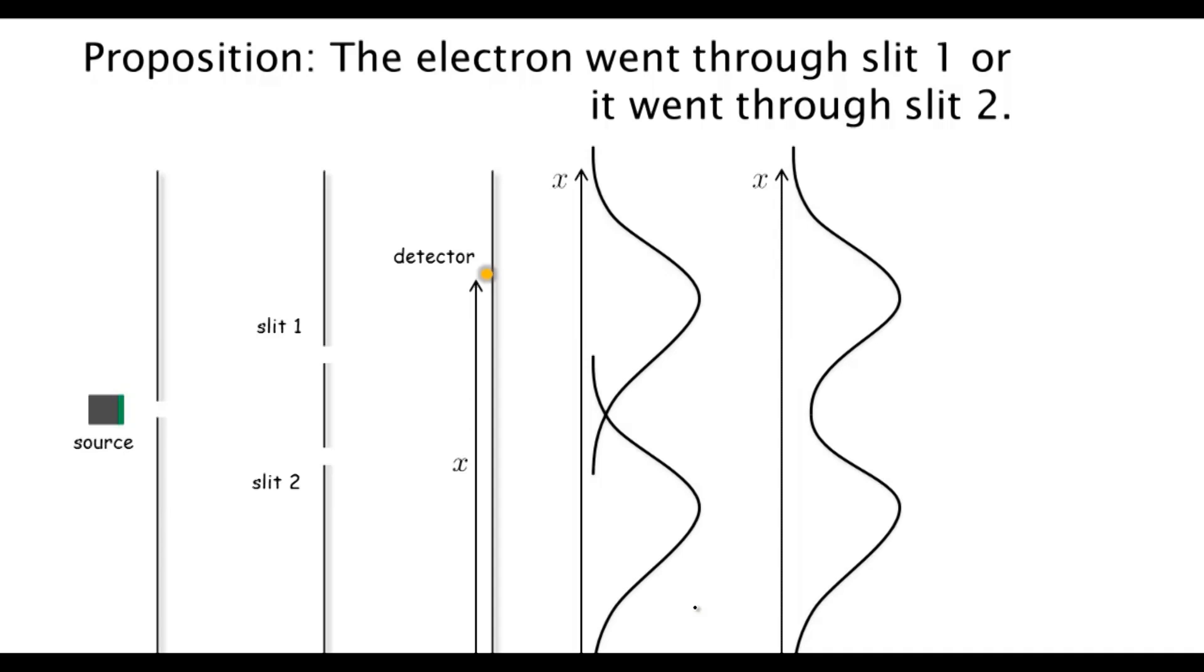We look at p12' of X, which is the total number of electrons that end up at X. It's exactly p1' of X plus p2' of X, and it's not equal to the interference pattern. So nature manages to—if you can tell which slit the electron goes through, the interference pattern disappears.